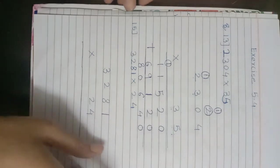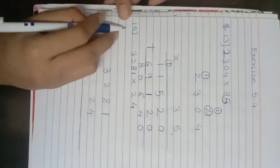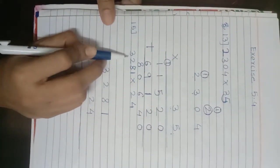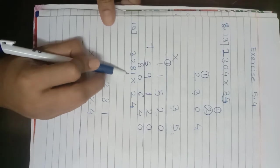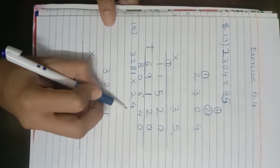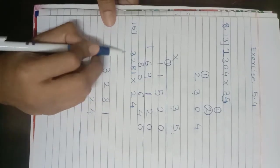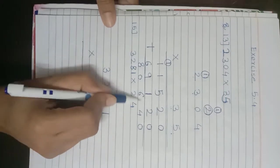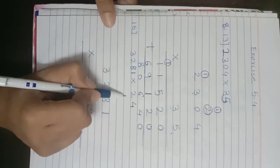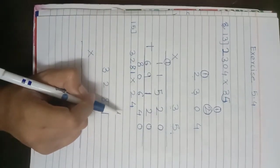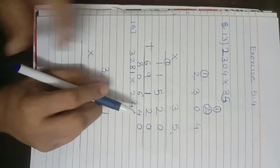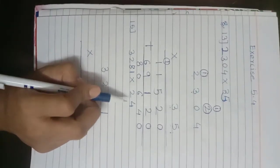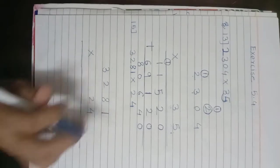Next is question number 15. Here we have to multiply 3281 by 24. So 3281 is the multiplicand and 24 is our multiplier, which is a two-digit number.